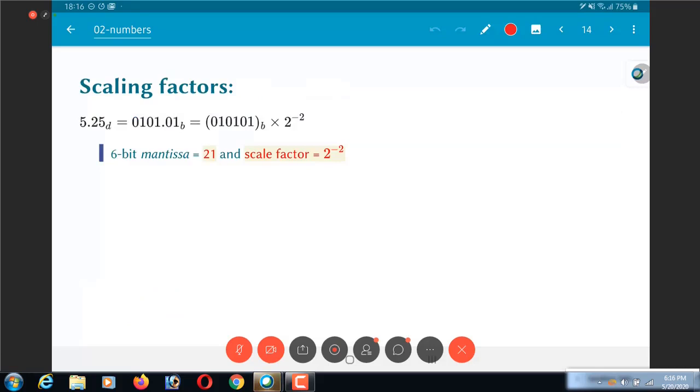Now what happens in the case of scaling factors? Like I said, 5.25 was this 010101, which is actually 21, sorry not 25, 21 times 2⁻². Okay, so it has a 6 bit mantissa, sometimes also called the significand or the mantissa, and this is multiplied by the scale factor of 2⁻².